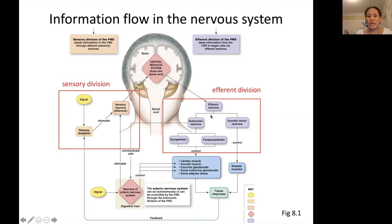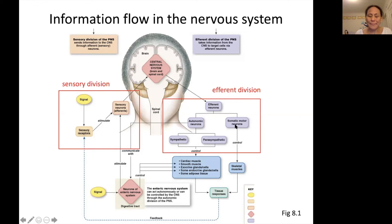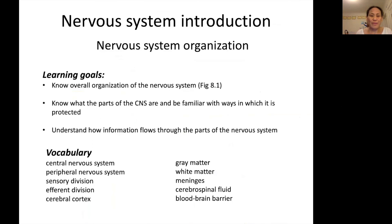The efferent division can be further subdivided, but we'll talk about that later when we have a whole set of lectures about the efferent division. That basically wraps up our discussion of nervous system organization.